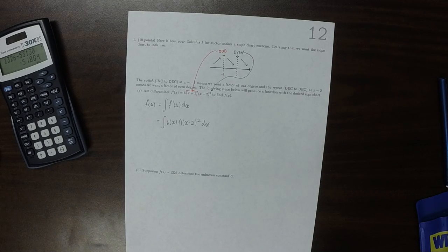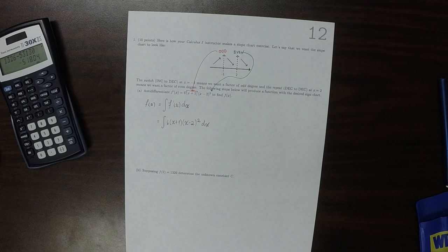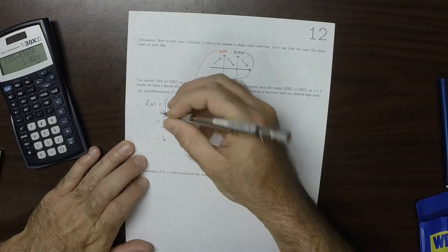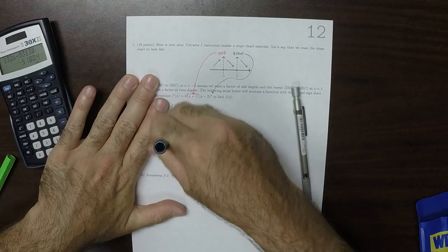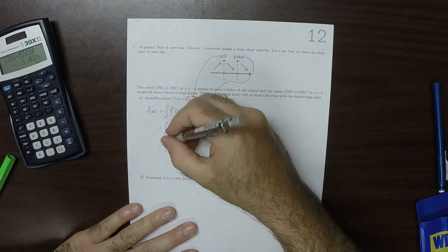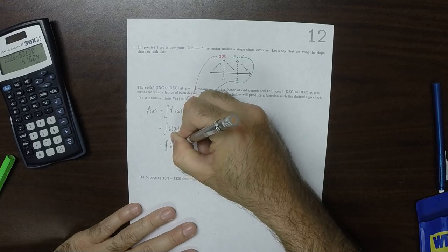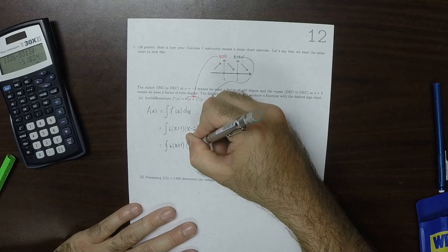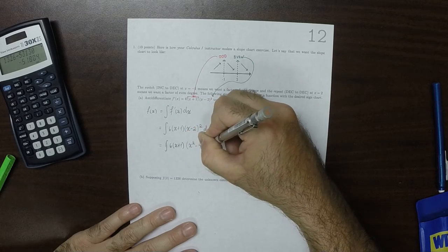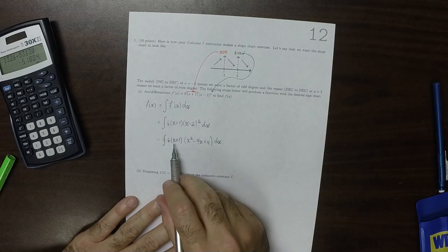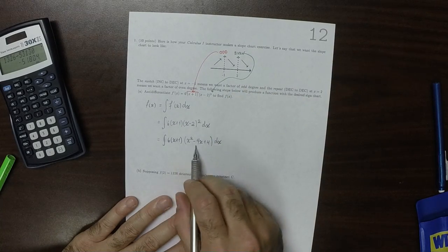The best thing to do here is to algebraically simplify that product as much as possible. So that would be 6, sorry, anti-derivative. So that would be 6x plus 1,